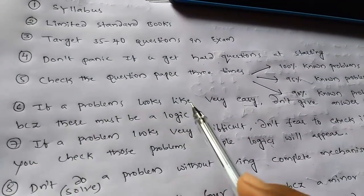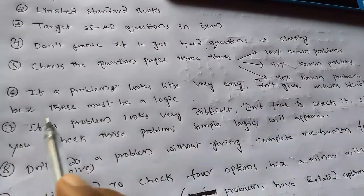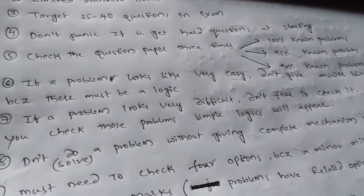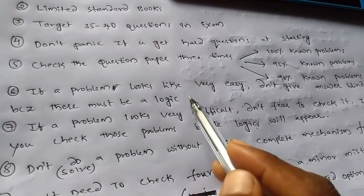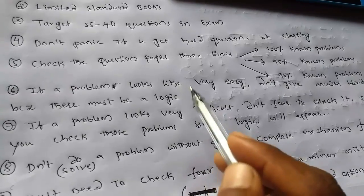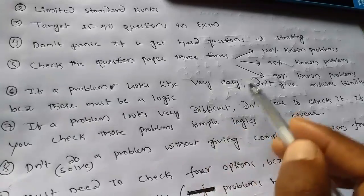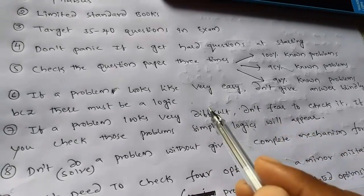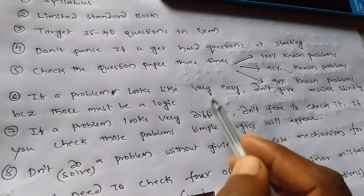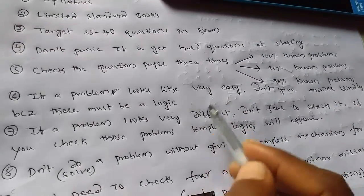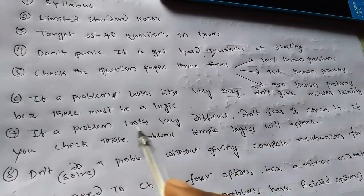Sixth key point is if a problem looks very easy, don't give the answer blindly because there must be a logic. This is the major point. This is the biggest weakness for me. In my exam, I was doing this by looking at the problem and just giving the answer for it because it looks very easy. After getting the answer key, I was getting it wrong. Many of them like these questions. Don't do that mistake.